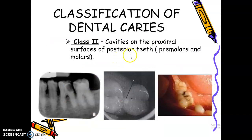Class 2 cavities are cavities on the proximal surface of posterior teeth — specifically premolars and molars, whether maxillary or mandibular, as long as it's on the proximal area. So if a tooth has both occlusal caries and proximal caries — Class 1 and Class 2 on one tooth — we take the more complex classification.